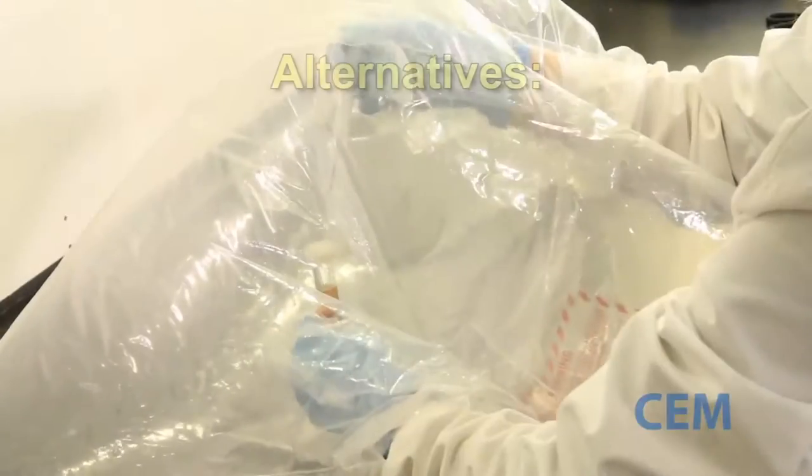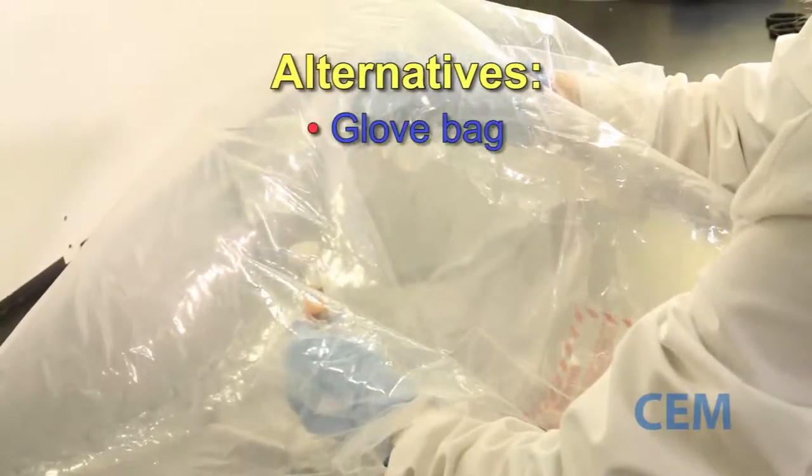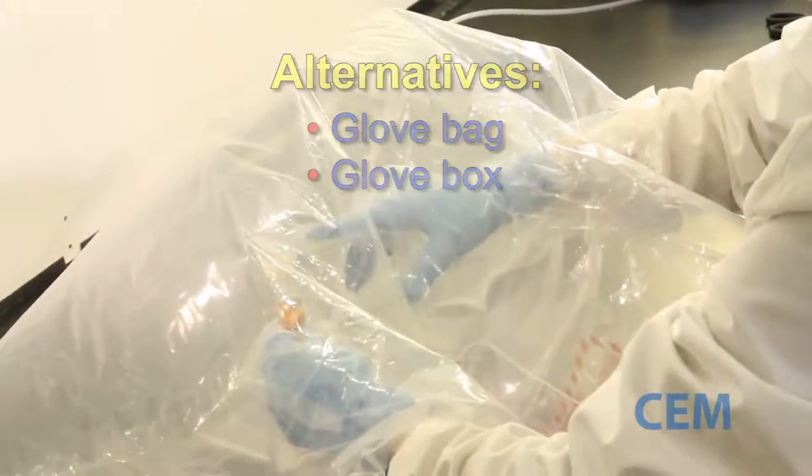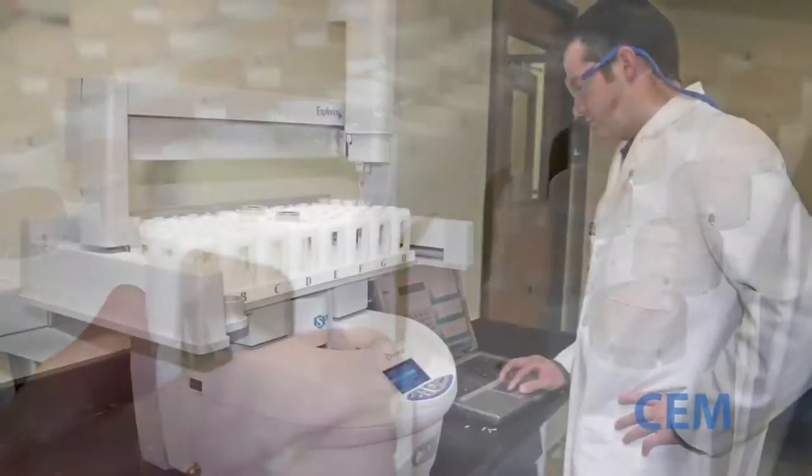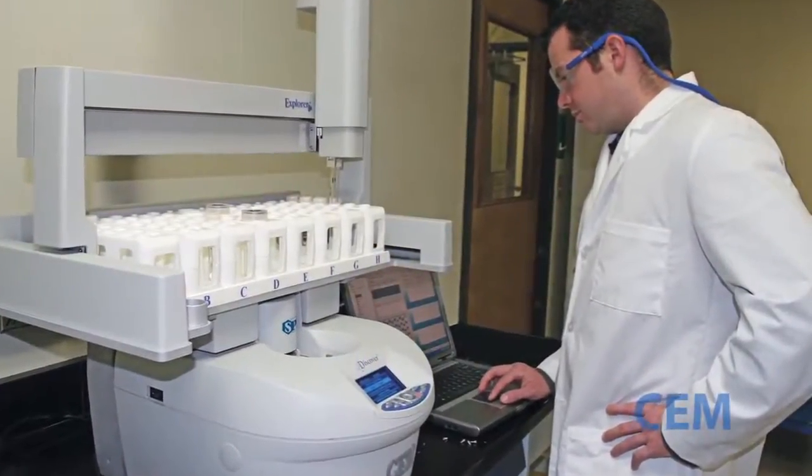Alternatively, you can prep the reaction vial in a glove bag or glove box. The Discover reaction vials will maintain the inert atmosphere for a couple of hours, so you're safe to prep multiple reactions at once and cue them up on the auto-sampler.